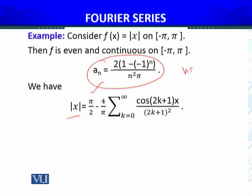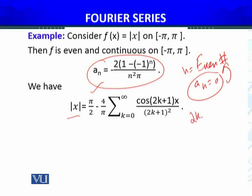If n is even — for example n = 2, 4, and so forth — then aₙ = 0. That is why I replaced n with 2k+1, where k is any natural number, so that we only get odd values of n. If n is odd, the expression becomes −4/(n²π), which gives us the −4/π factor with 2k+1 in the denominator. This is the Fourier series of |x|.